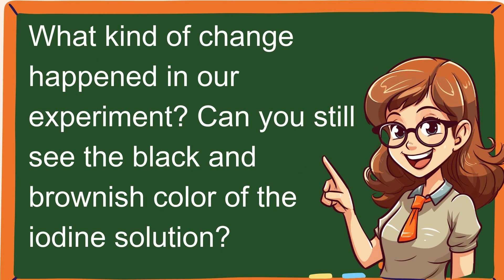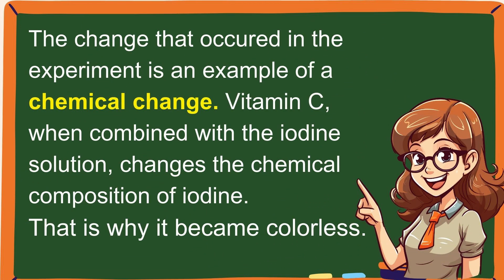What kind of change happened in our experiment? Can you still see the black and brownish color of the iodine solution? The change that occurred in the experiment is an example of a chemical change. Vitamin C, when combined with the iodine solution, changes the chemical composition of iodine — that is why it became colorless.